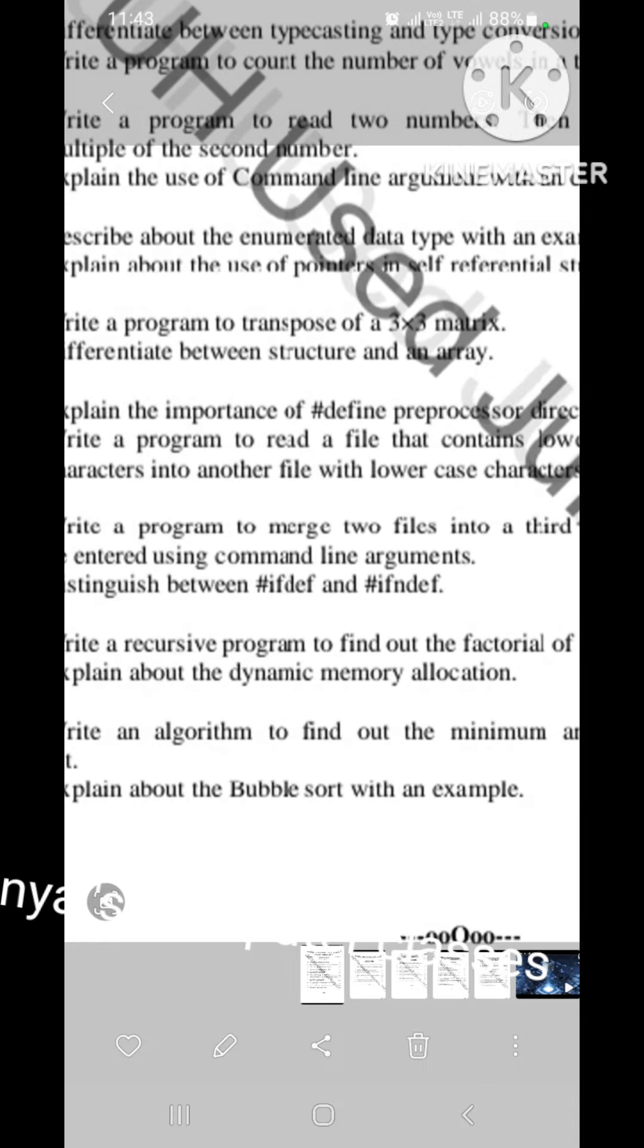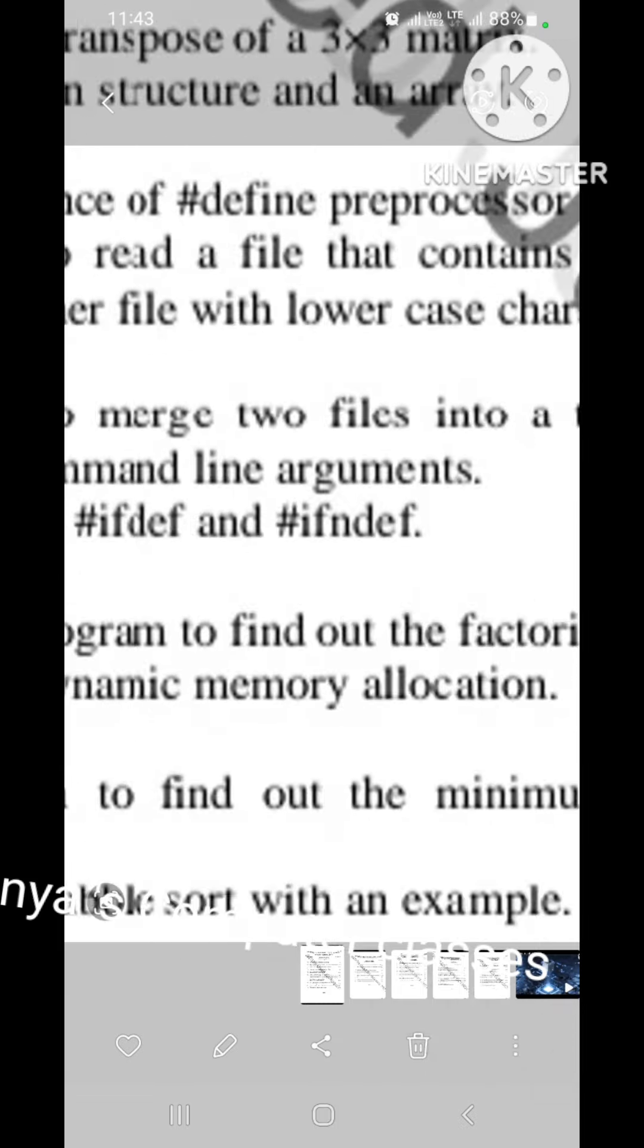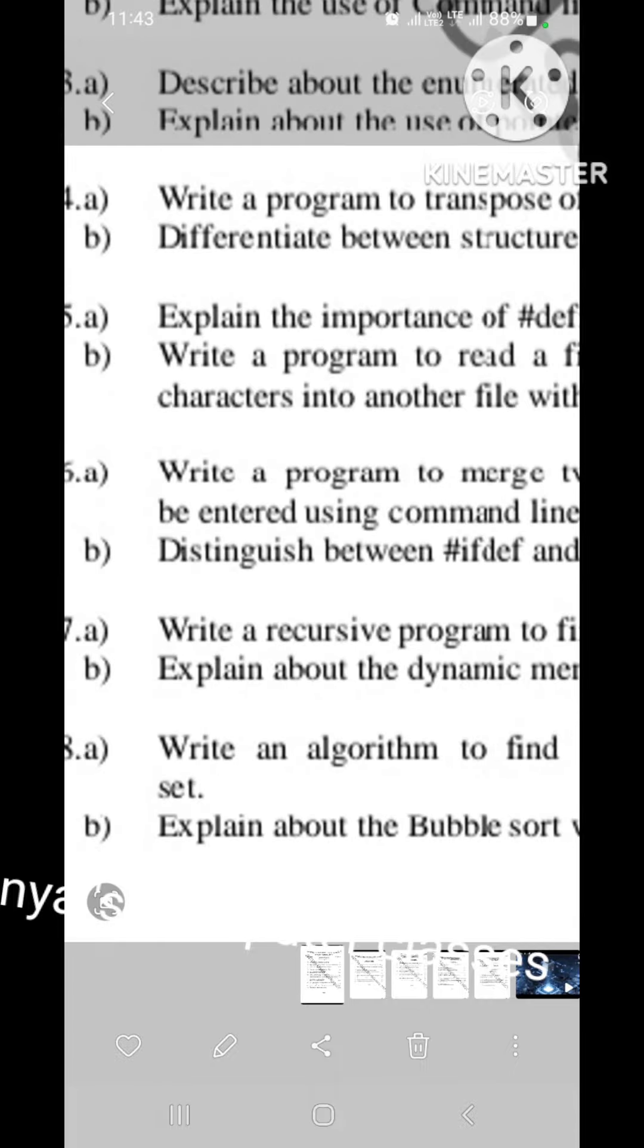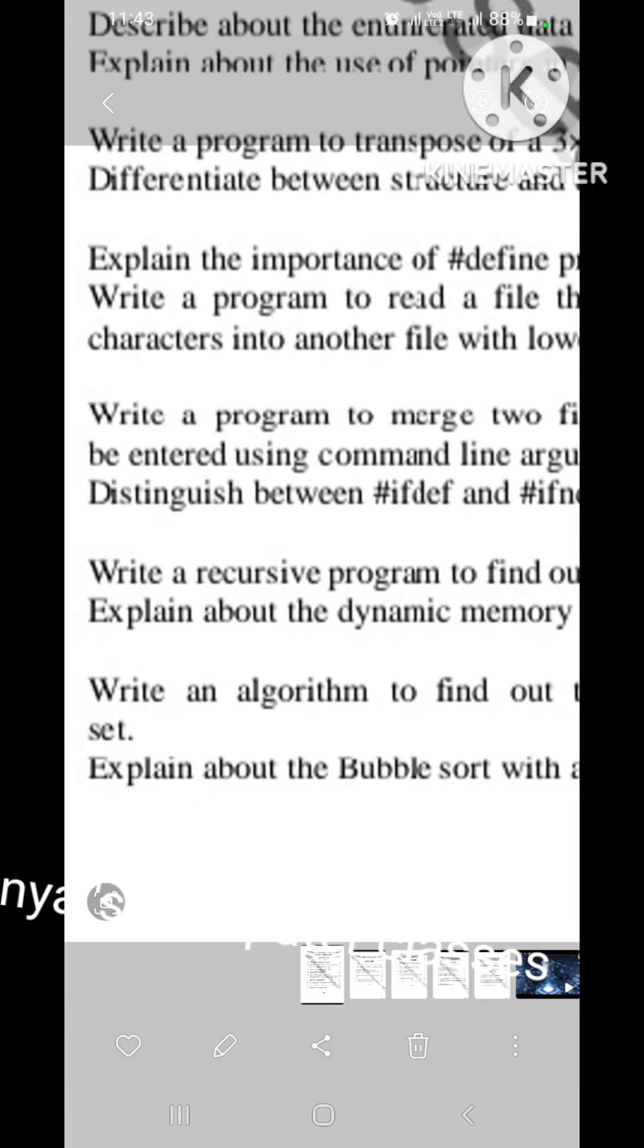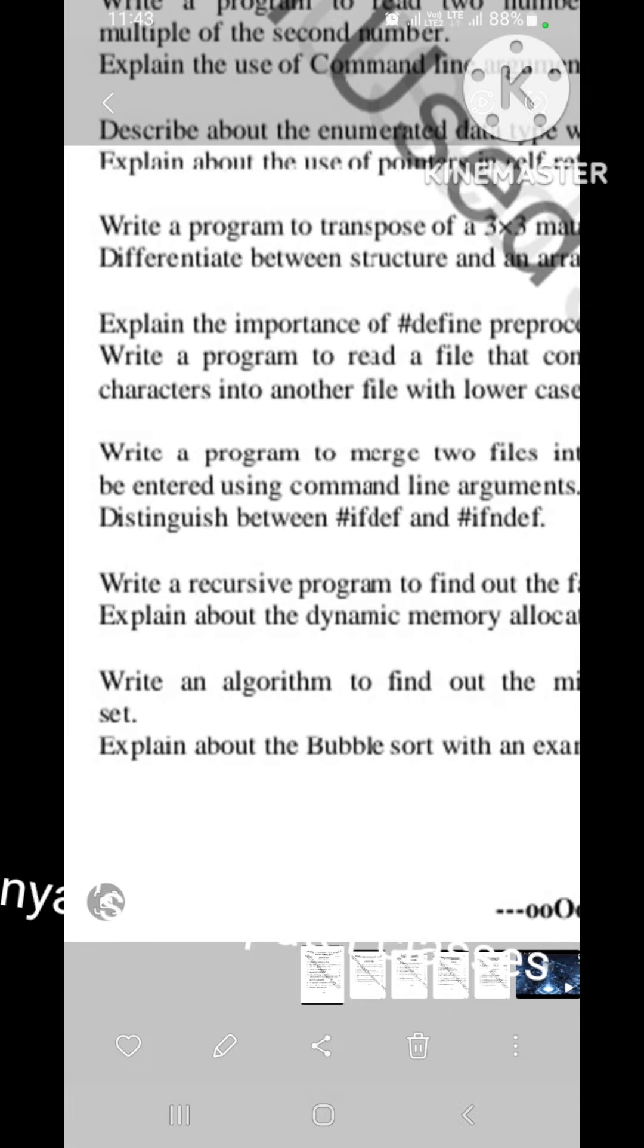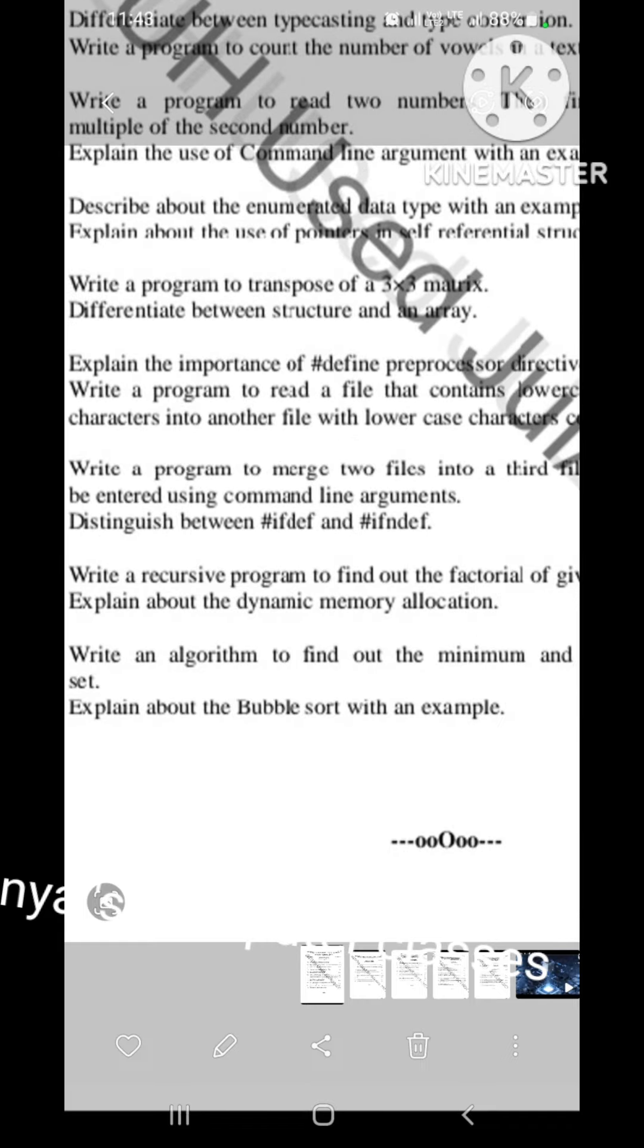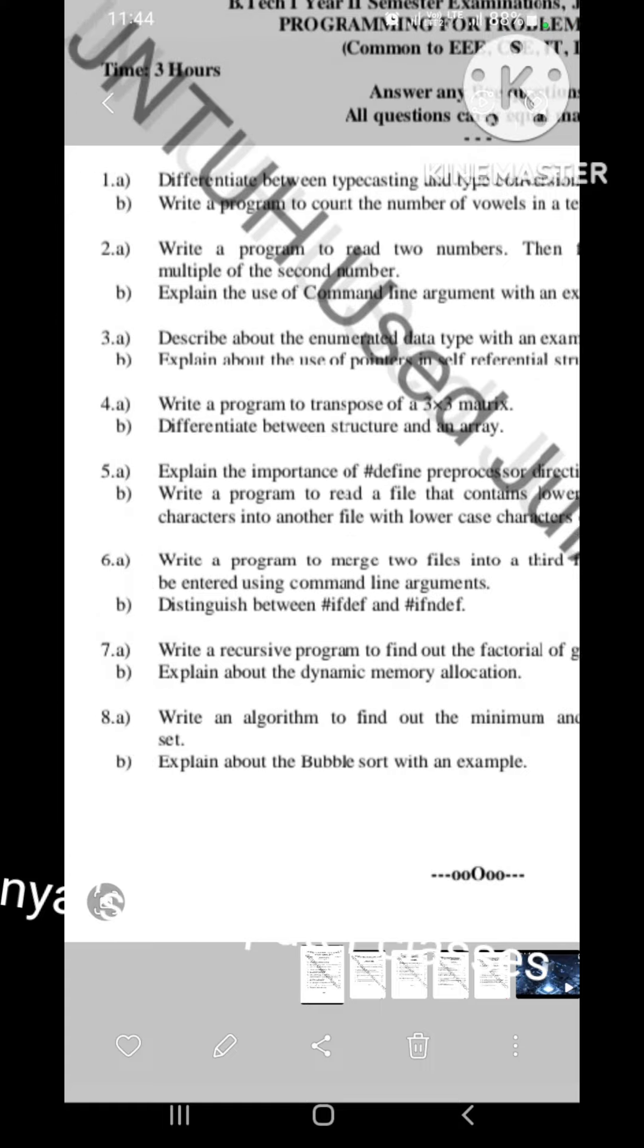Sixth A is, write a program to merge two files into a third file. The names of the files must be entered using command line arguments. That is a program, program is 8 marks. Next one is, distinguish between hash if def and hash if and def. This is also coming from preprocessed commands, preprocessed directives. 8 plus 7, 15.